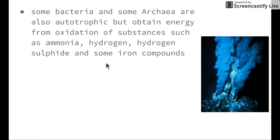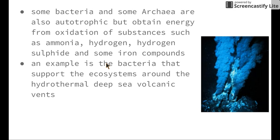Some bacteria and archaebacteria are also autotrophic — they can make their own food, but they obtain their energy through a process called oxidation, using substances such as ammonia, hydrogen, hydrogen sulfide, and some iron compounds to create energy rather than carbon dioxide. An example is the bacteria that support the ecosystem around hydrothermal deep-sea volcanic vents.